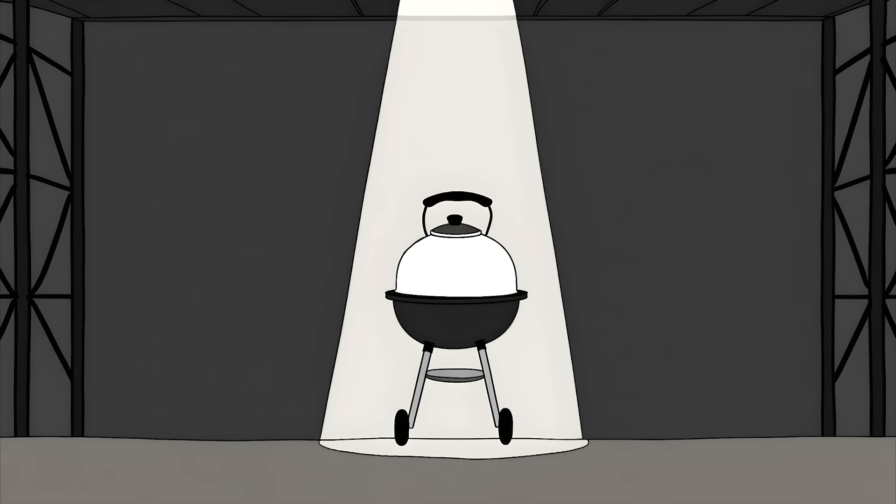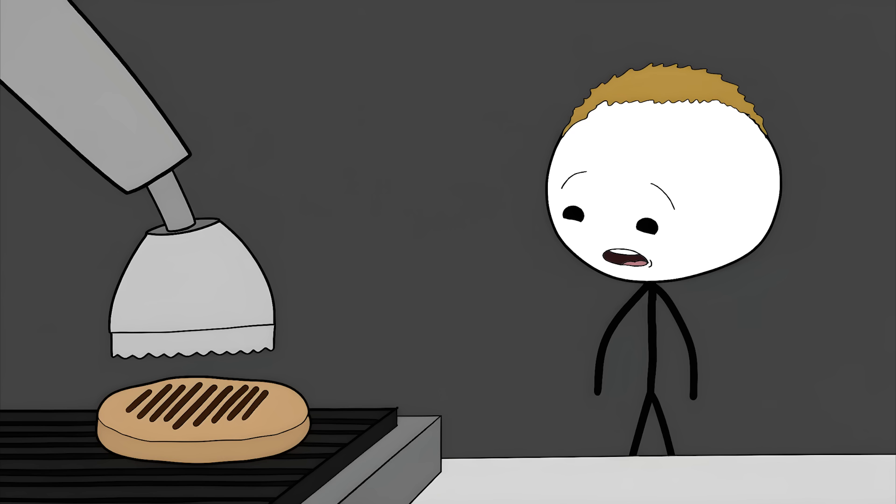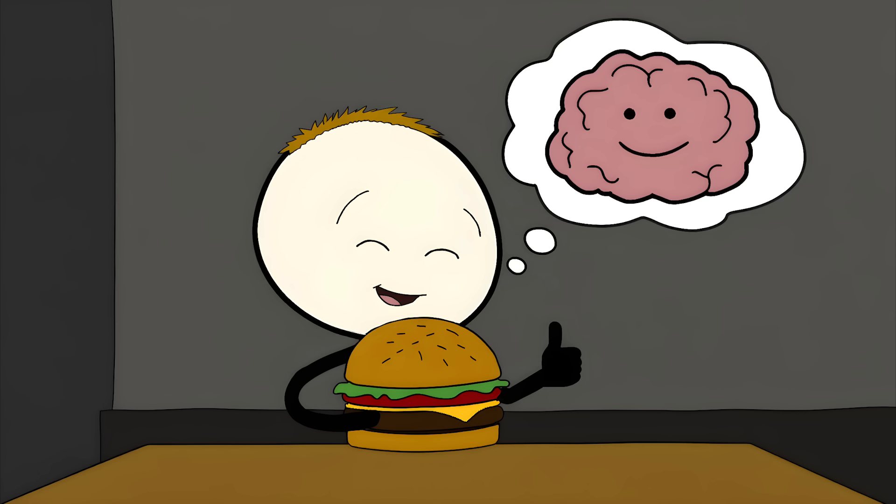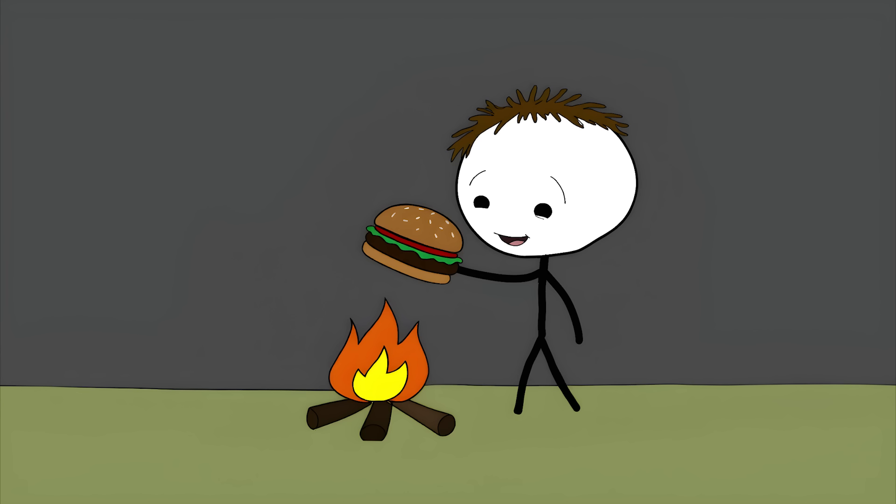Most of this food has never seen an actual grill. It's cooked in massive industrial ovens, then gets the fake tattoos slapped on at the end. To sell the illusion, they add artificial smoke flavor. These fake marks actually trick your brain into thinking the food tastes better. Scientists have found that just seeing grill marks makes people rate food as more flavorful. Your brain sees those lines and goes, yep, that's definitely cooked over an open flame.